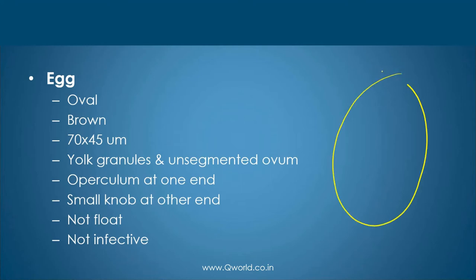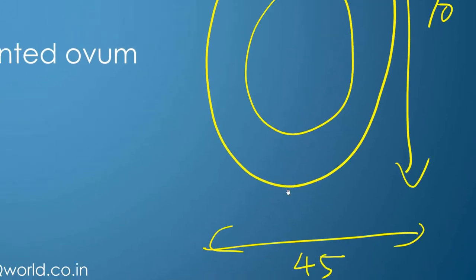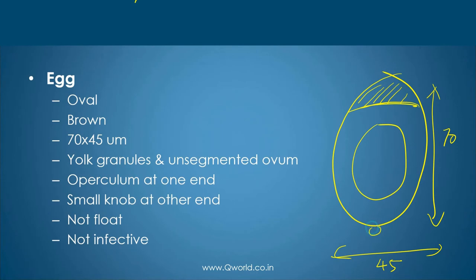The egg is oval in shape and brown in color, measuring 70 by 45 micrometers. It contains an unsegmented ovum. A characteristic feature is an operculum — a cap-like structure at one end — and exactly opposite to it there is a knob-like structure. That is how you identify this egg. It does not float in saturated solution of salt, and the egg is not the infective form.